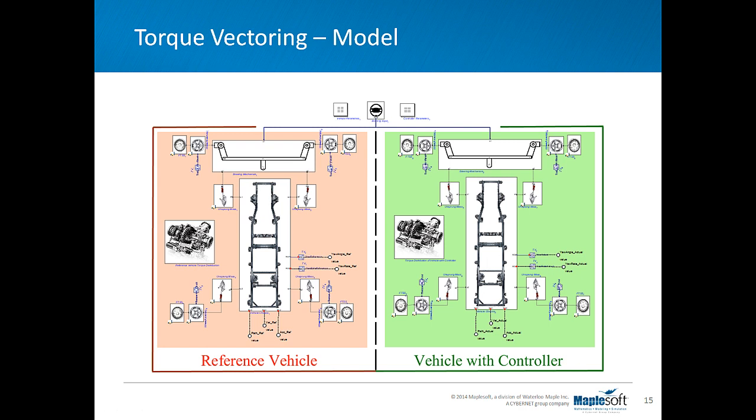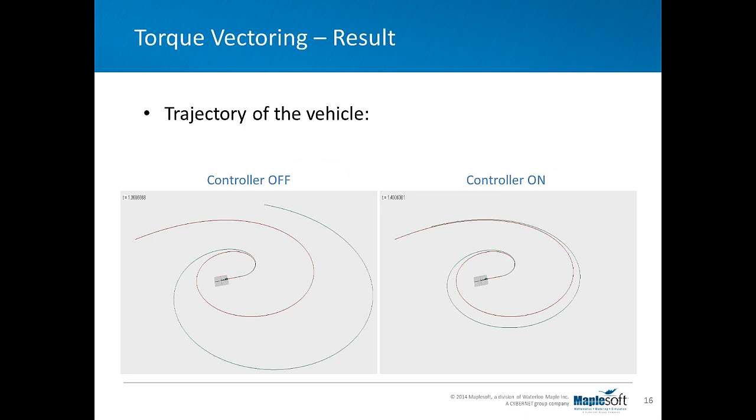After some adjustment to the PID gains, we can compare the vehicle responses by turning the controller on and off. As you can see in this slide, the reference vehicles are in both videos shown with the red color and the paths. The red paths means it's a reference path.